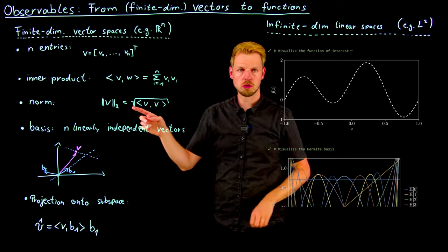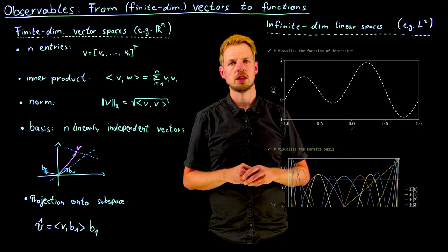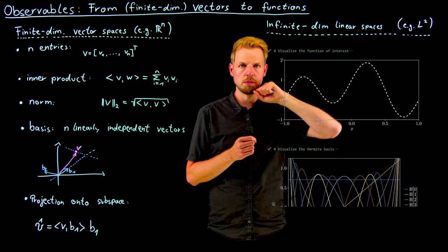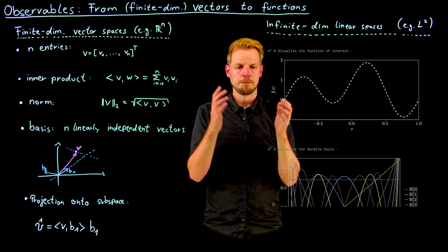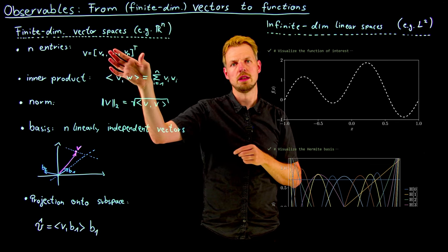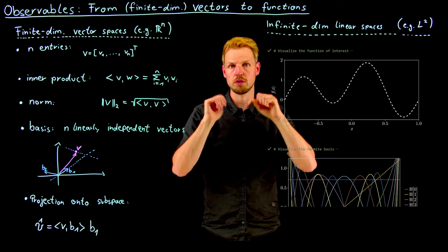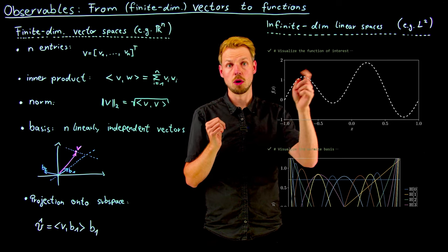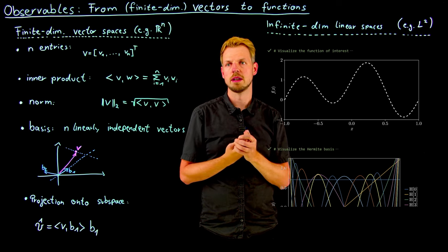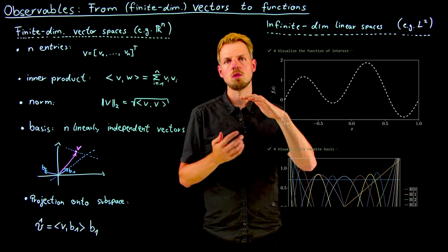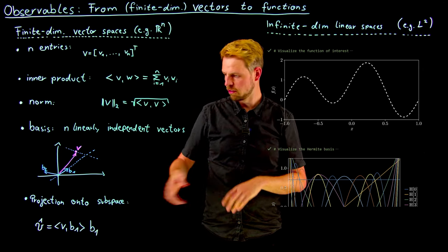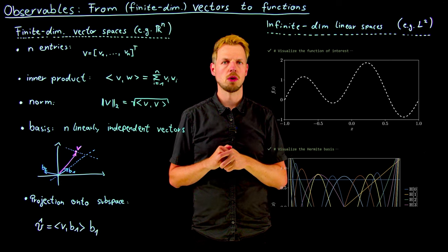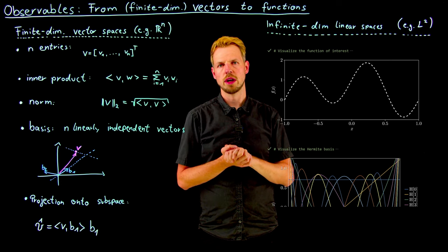Let's look at an example. We want to approximate this function, a superposition of sine and cosine functions. It's defined at infinitely many points in space between minus one and one. We cannot define it by n points as we did before - it's an infinite number of points for every x we can choose. We want to study this function within a subspace.